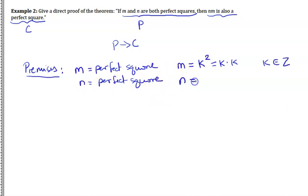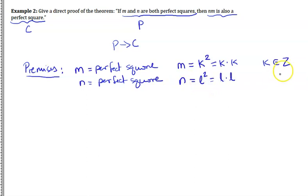Make sure you don't use the same variable for both — don't use the same K. A common mistake in proofs is using the same variable, which means you're not working with the most general case where M and N are different numbers; you'd only be proving the special case where they're equal. So let's say N equals L squared, or L times L, where L is also an integer.